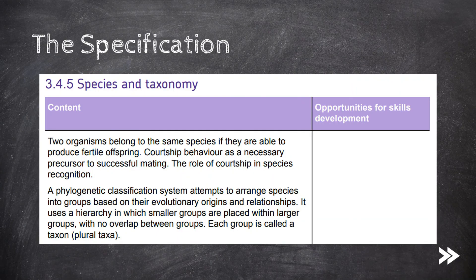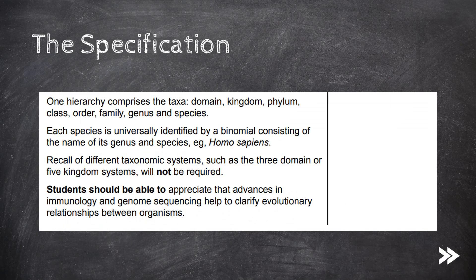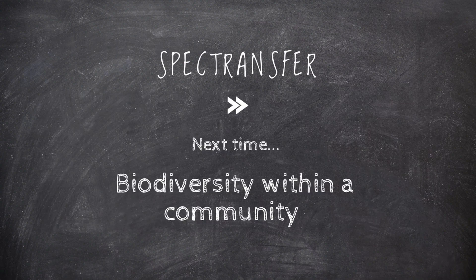So we've defined what a species is. We've covered courtship behaviour, as well as the phylogenetic classification system and how it is hierarchical. We've covered taxonomy and what the different taxa are, as well as how to identify each species using the binomial naming system. That would be it for now, guys. Thanks for watching. If you have any ideas or suggestions, just post them down below. Subscribe, comment. Next time, we'll be looking at biodiversity within a community.